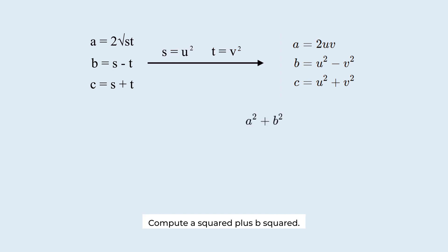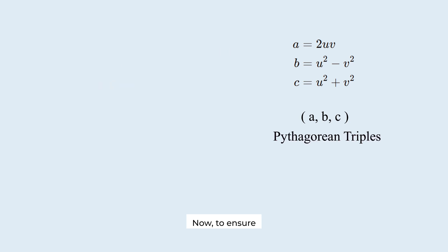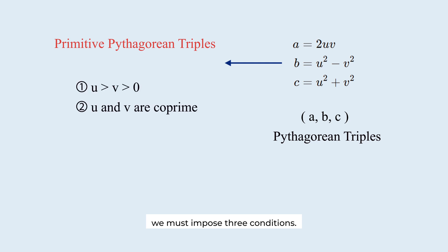Compute a squared plus b squared. It equals c squared. The Pythagorean theorem is satisfied. This formula always gives valid Pythagorean triples. Now, to ensure the triple is primitive, we must impose three conditions.